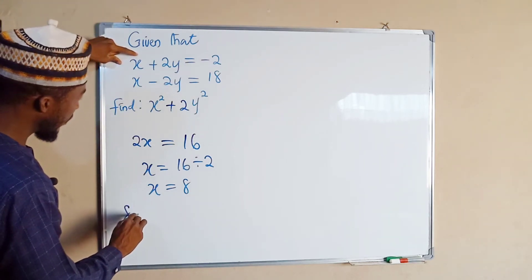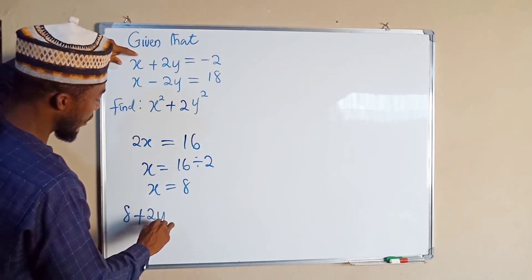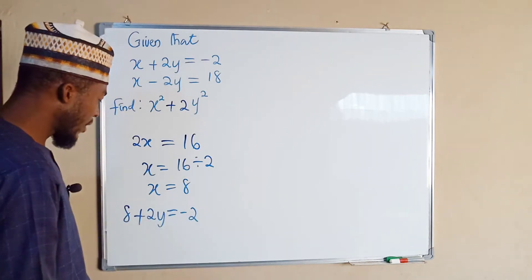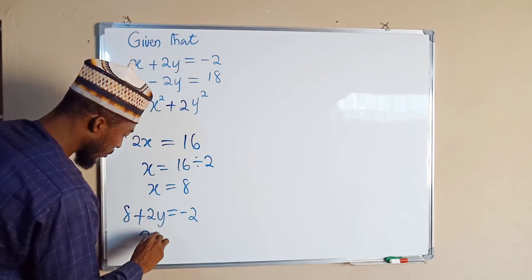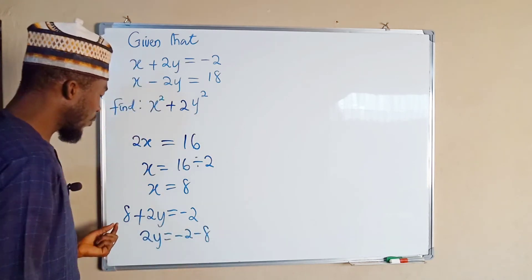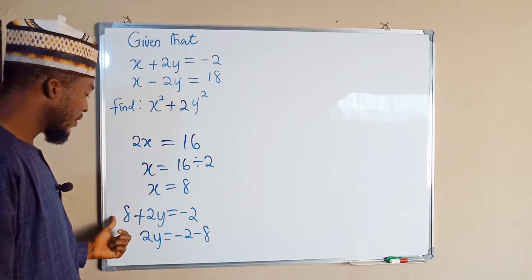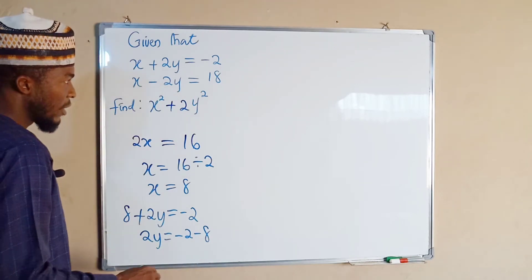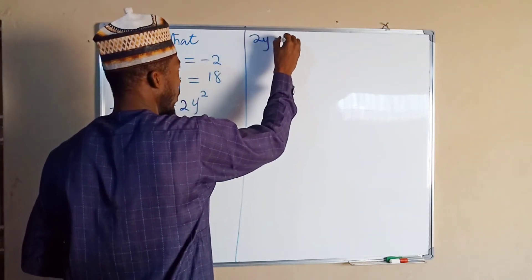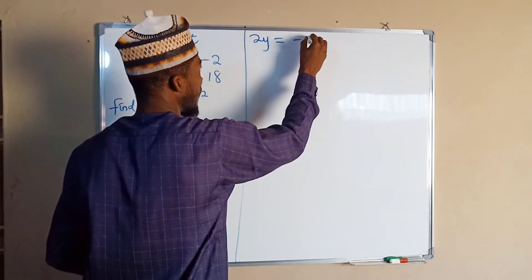Taking this to the right-hand side, we have 2y = -2 - 8, because once it crosses the equality sign, the sign will change. Therefore, we have 2y = -10.